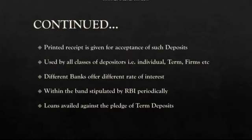The term deposit interest rate is set by the bank, but within a specified band regulated by the RBI. For example, one bank may offer a 2% rate of interest, another 6%, and another 11% — but all within the RBI's specified band. The RBI regulates the period and rate of interest so that rates are consistent across banks.